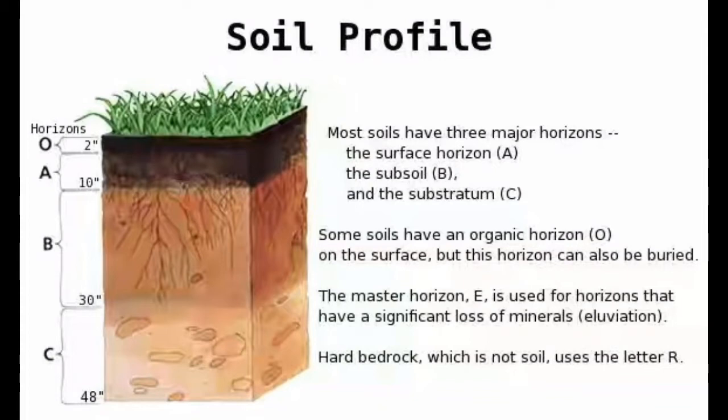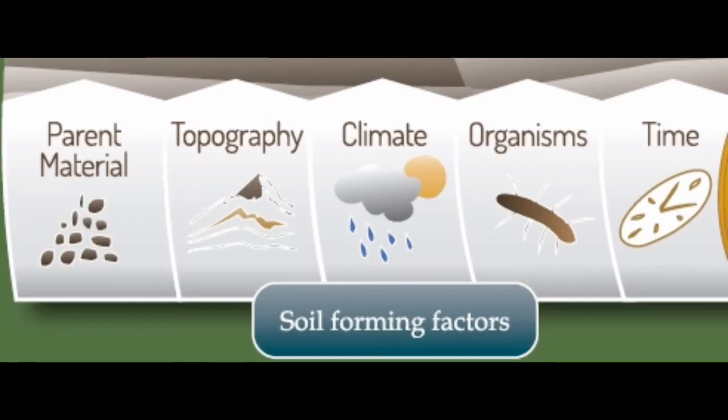Soil in the course of time gets enriched by humus as a result of decaying organic substances. Soils are usually formed from rocks through the intermediate stage of formation of regolith, which results due to weathering of rocks. Soil is formed by the physical, chemical, and biological changes that take place continuously in the soil layer.